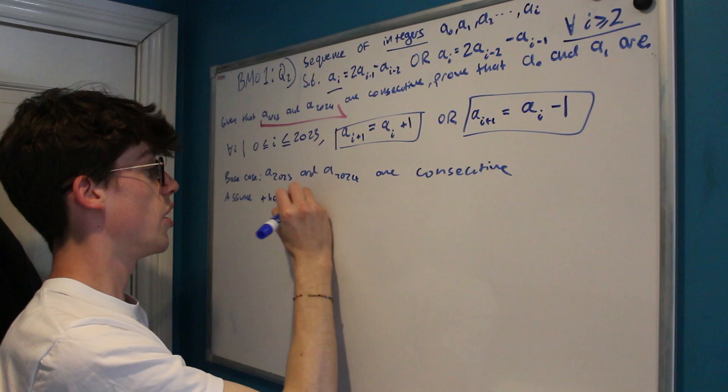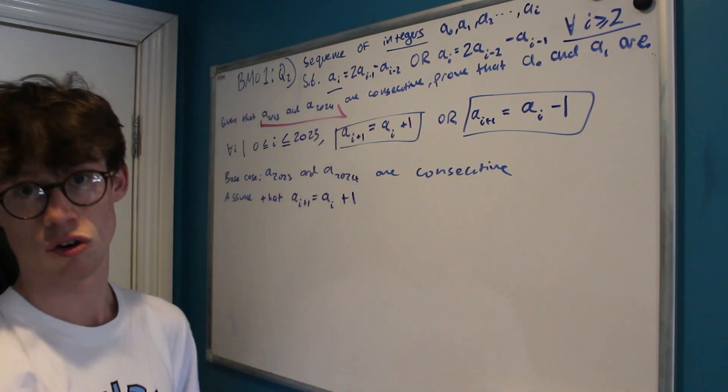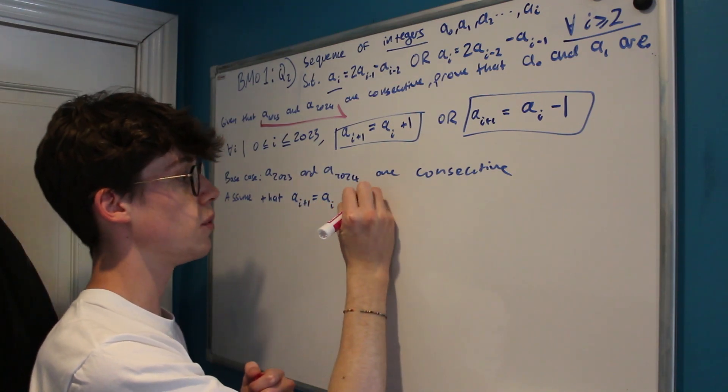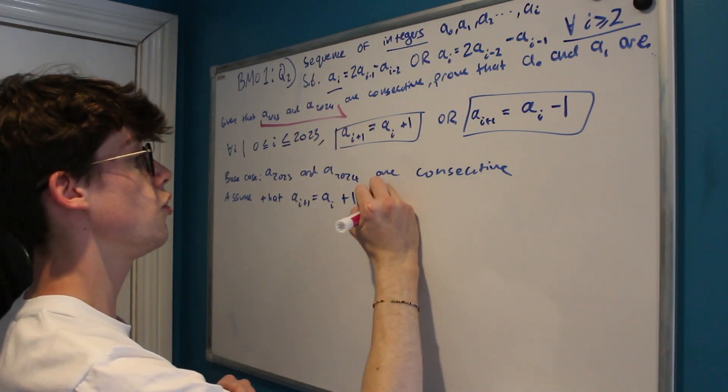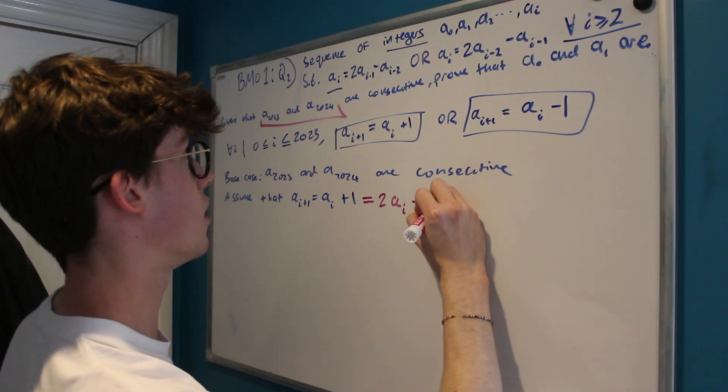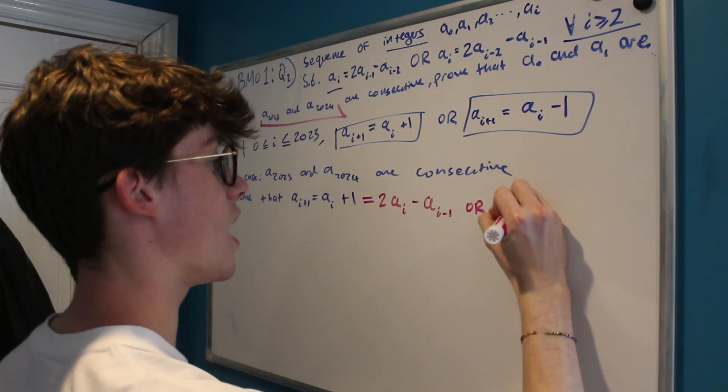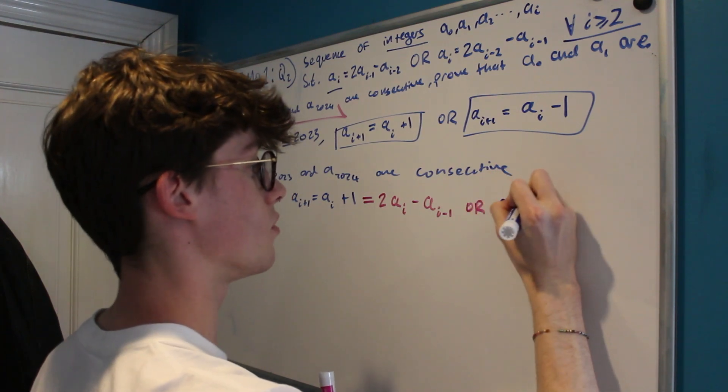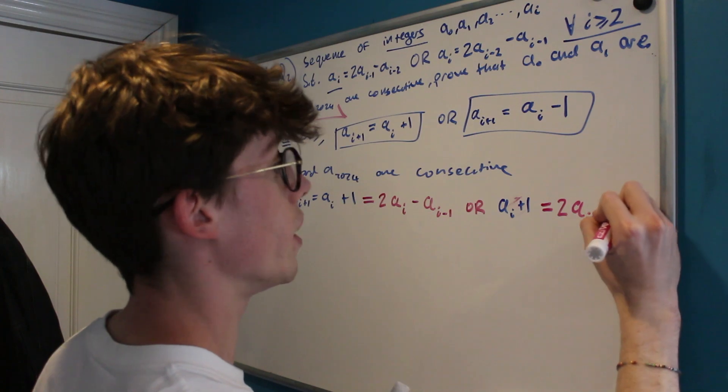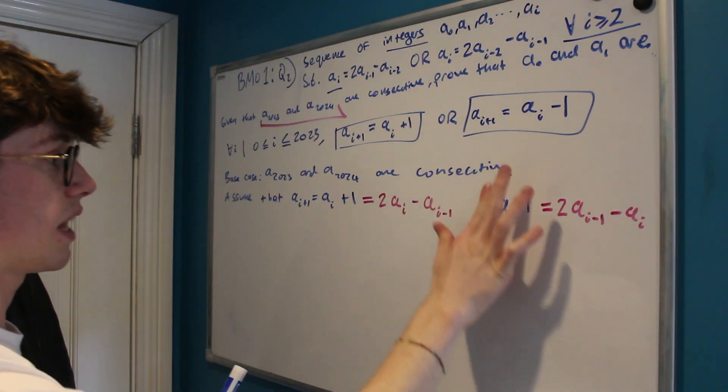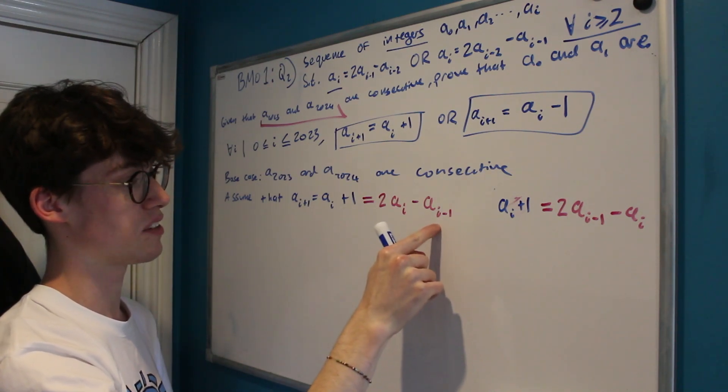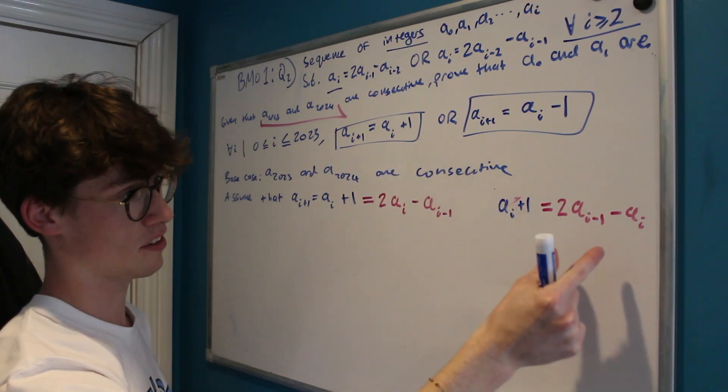And so now what we're going to do is assume this is our assumption that ai plus 1 is equal to ai plus 1, so we'll deal with the first option for i to just being consecutive. Now if this is the case then ai plus 1 is also equal to either two times a, well the term prior is going to be i minus ai minus 1, or ai plus 1 is equal to two times ai minus 1 minus ai.